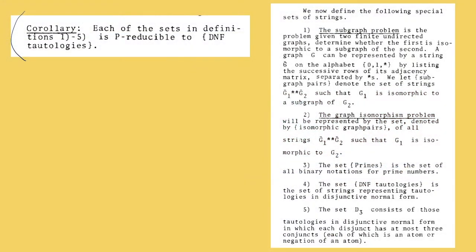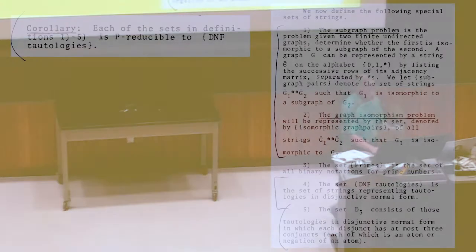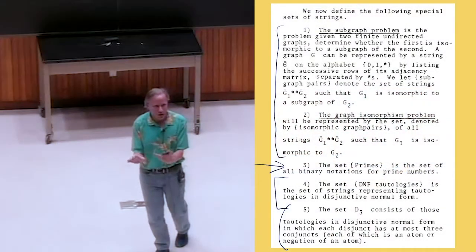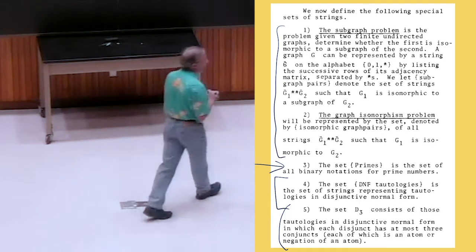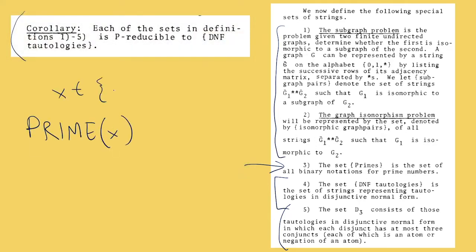Do we recognize any of those problems? They're graph problems. Graph isomorphism is definitely a famous NP-complete problem, though we haven't talked about it in class. One entry is DNF tautologies itself — it's kind of uninteresting that you can reduce it to itself, almost cheating to count that one. And there's one pretty surprising one on the list: the set of prime numbers. As a decision problem, primes takes a string of bits and tests whether the input is prime — returning one for any prime input.